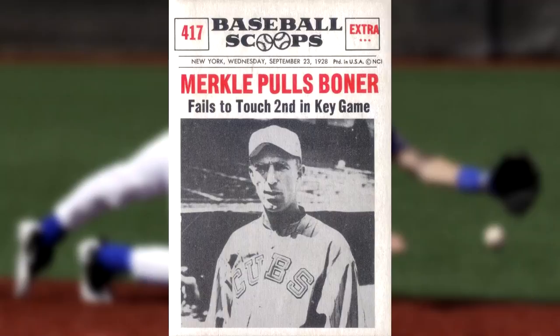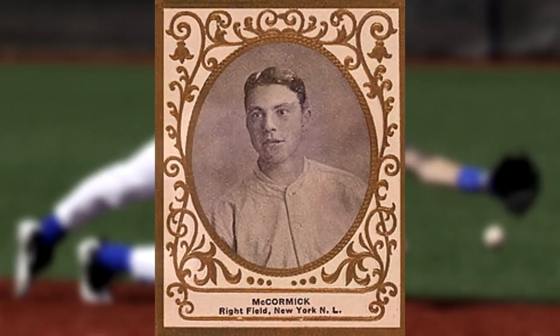In the year 1908, on 23rd September, the game played between the American League and the National League took place at the Polo Grounds. The game concluded in an inexplicable turn of events, referred to as the Merkel Boner. The game was between the New York Giants and Chicago Cubs. Fred Merkel was the first baseman, along with his teammate Moose McCormick who was on his third base with two outs and the game tied between the two teams.